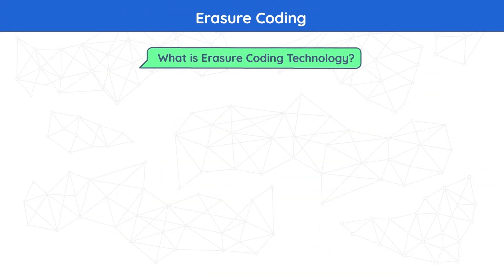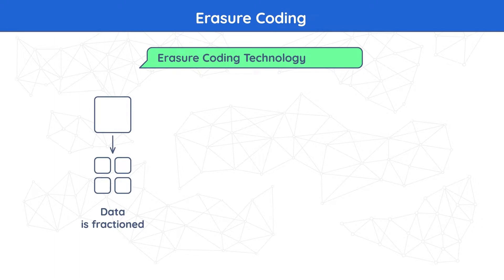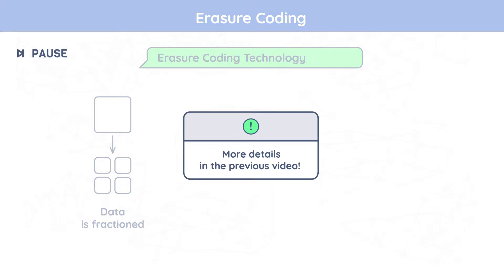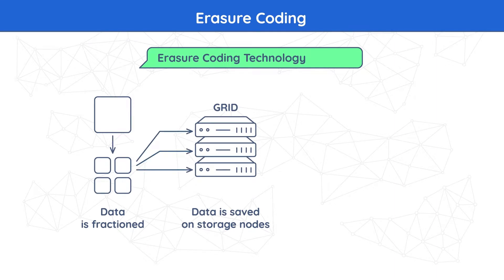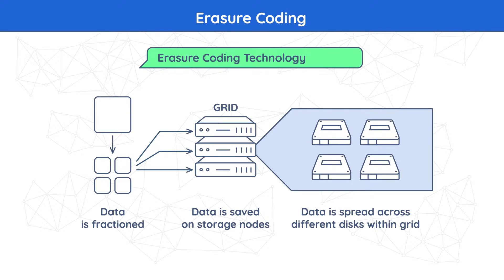Now that we've recapped the previous video, we can dive into today's topic. Erasure coding is quite a complicated technology. For quick understanding, erasure coding has different implementation variations, which means each individual variation can possess a somewhat different name. In this video we'll discuss the general idea behind the technology and the principles of its work. IT administrators who design storage systems must plan ahead their IT infrastructure configuration so that mission-critical data is not lost in case any failure occurs. Using erasure coding prevents the loss of data due to storage node failure.